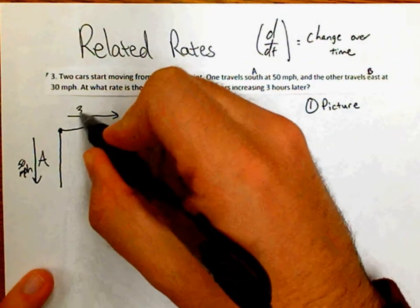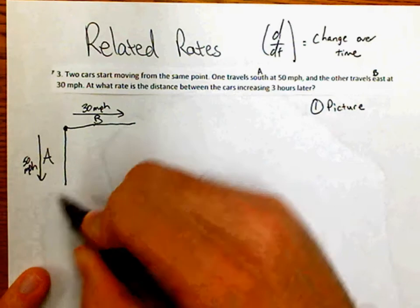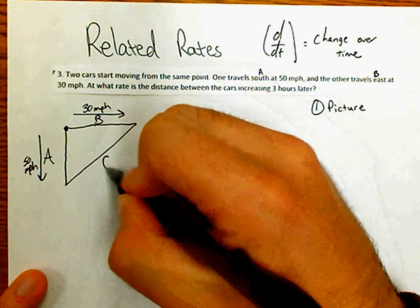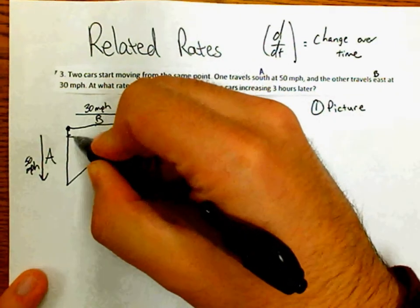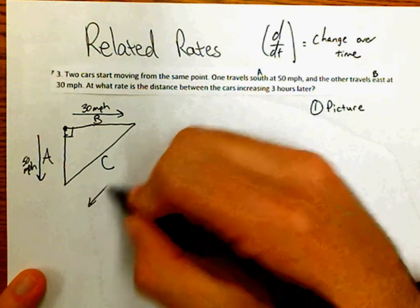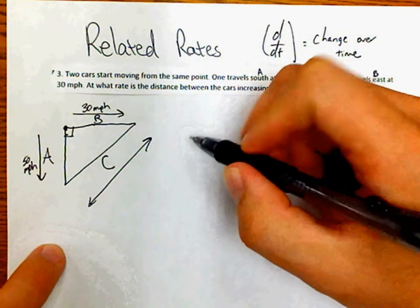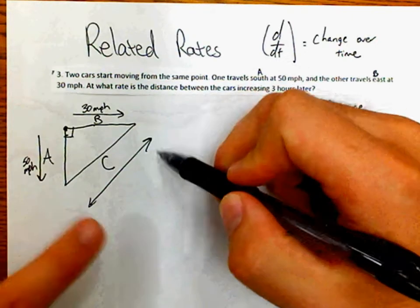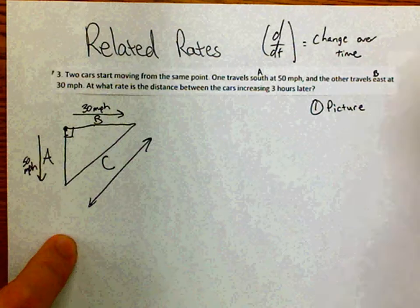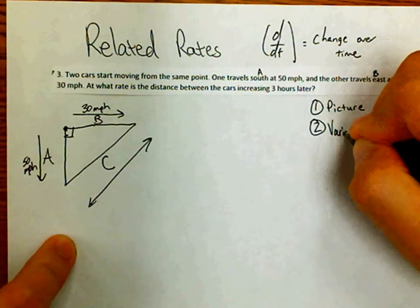Car A is traveling south at 50 miles per hour and car B is traveling east at 30 miles per hour. You might start to see it here — this is a right triangle. The distance between the cars, let's call that C, is the hypotenuse. C is expanding in both directions, so the faster each car goes, the more it affects C.